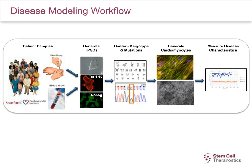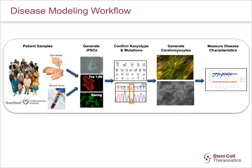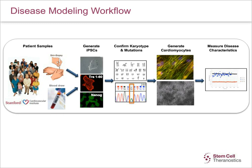We also use Thermo antibodies for characterization of our iPSC cells. We routinely culture our cells in Essential 8, or E8, medium. All our master banks and working cell banks are also derived in Essential 8 medium. Our routine go-to product for cardiomyocyte differentiation is Thermo's PSC cardiomyocyte differentiation kit, which works well for most of our cell lines. For some difficult cell lines, we have to tweak the kit with our own growth factors or small molecules.